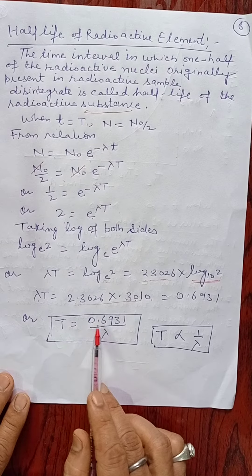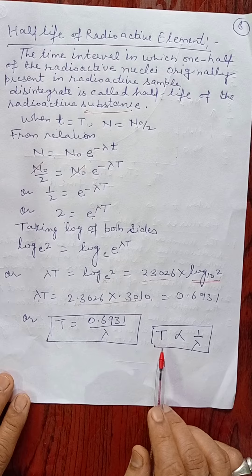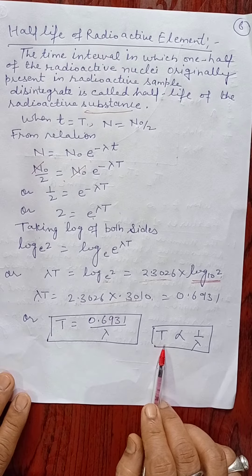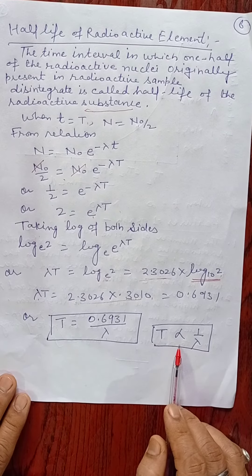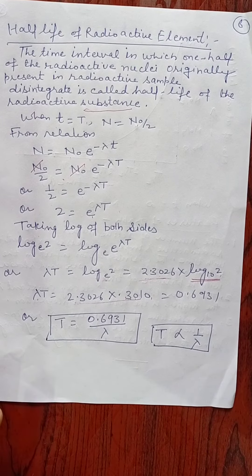So T comes out to be 0.6931 by λ. The half-life of a radioactive element is inversely proportional to disintegration constant. Thank you, have a nice day.